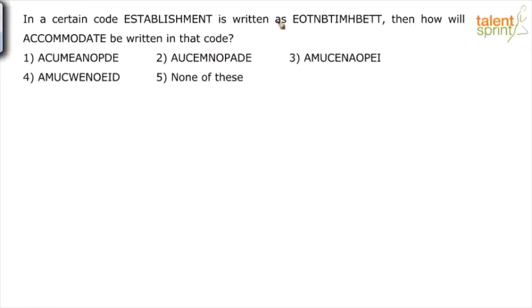In a certain code, establishment is written as EOTNBTIMHBETT, then how will accommodate be written in that code?